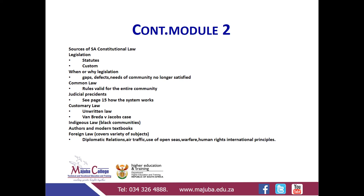The legislature decides to pass legislation when there are gaps in the law, when there are defects in the law, and when the needs of the community are no longer satisfied by the current law. Common law covers the rules valid for the entire community. We also find the judicial precedent, which is written in point form on page 15.